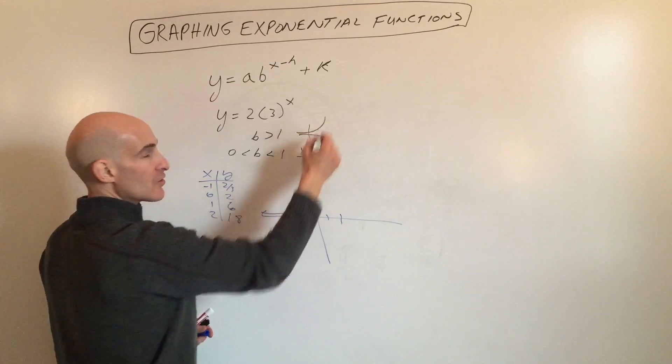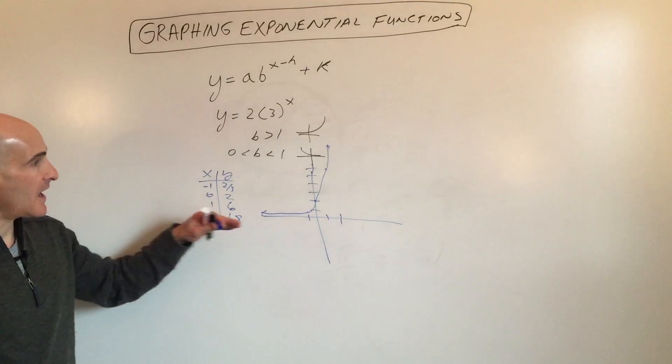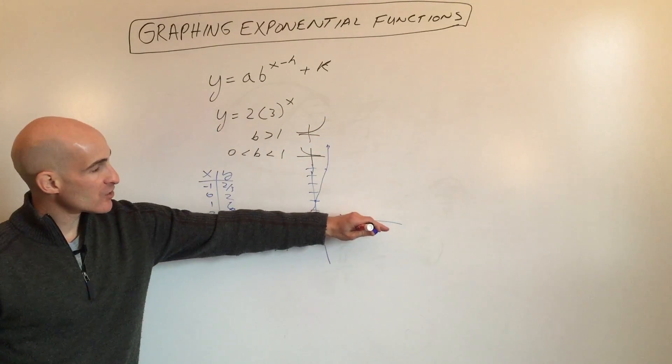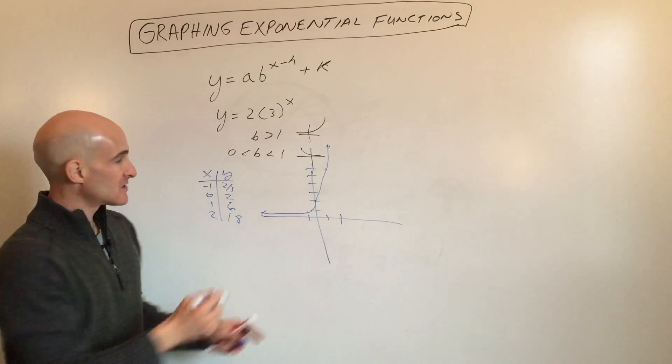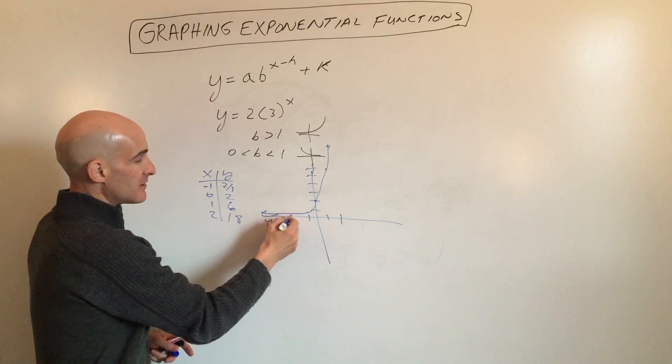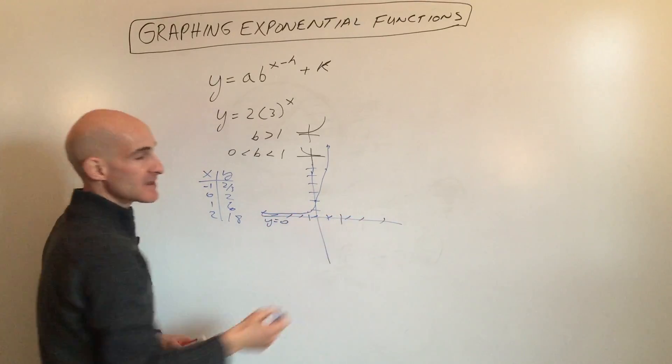It goes up at a faster and faster rate. That's exponential growth. Notice that the horizontal asymptote, the x-axis, which is the line y equals 0, the graph gets closer and closer to that line. That's the asymptote.